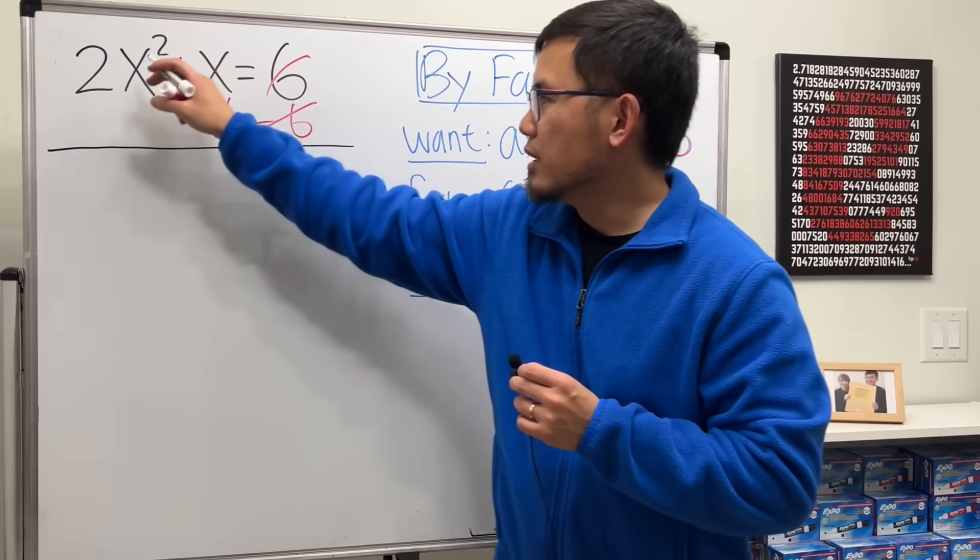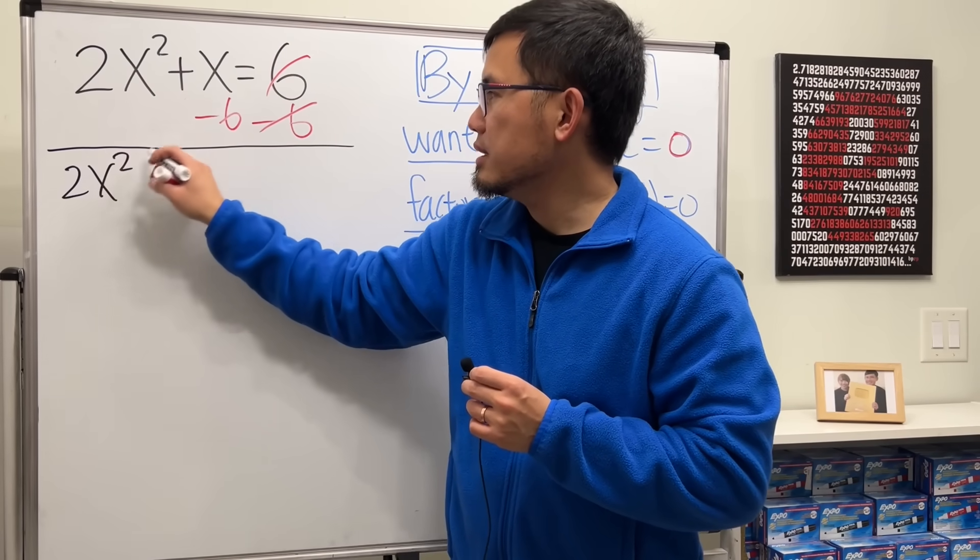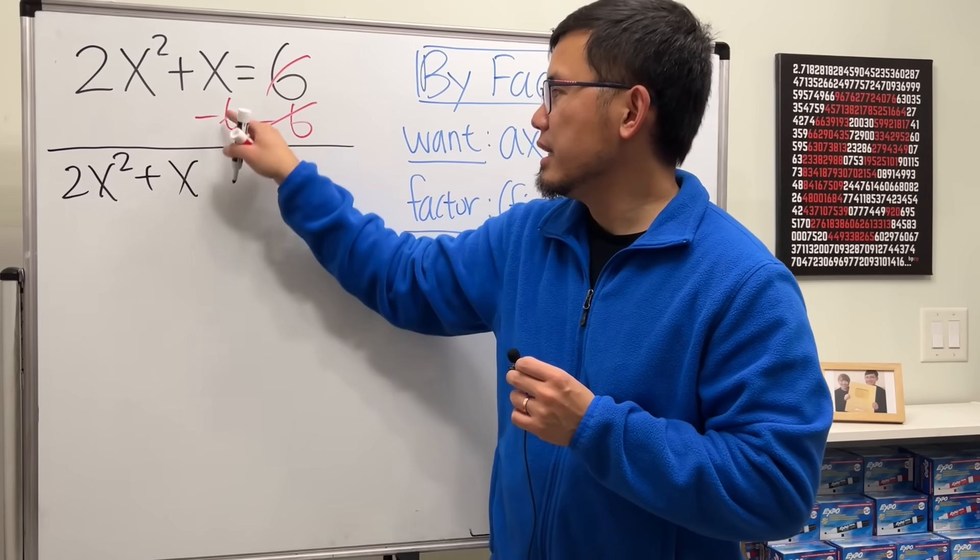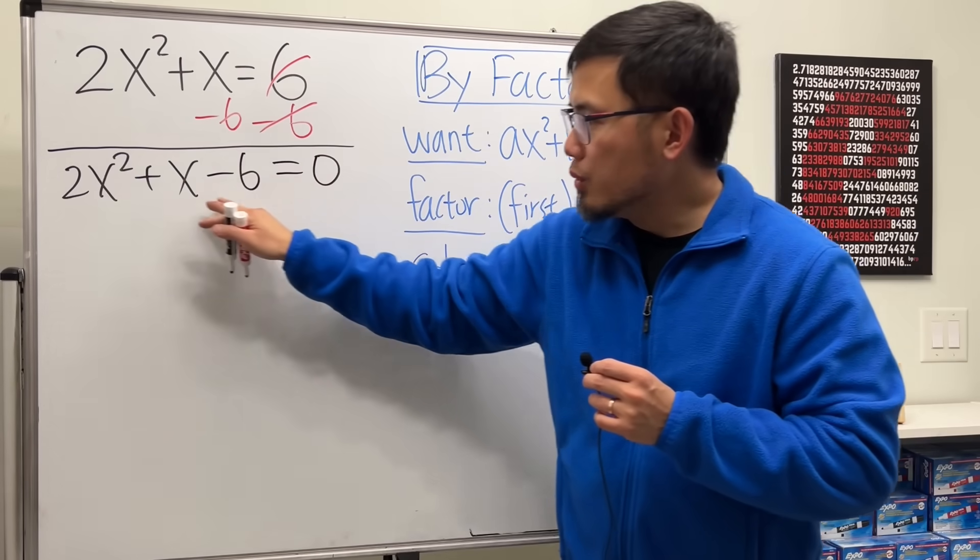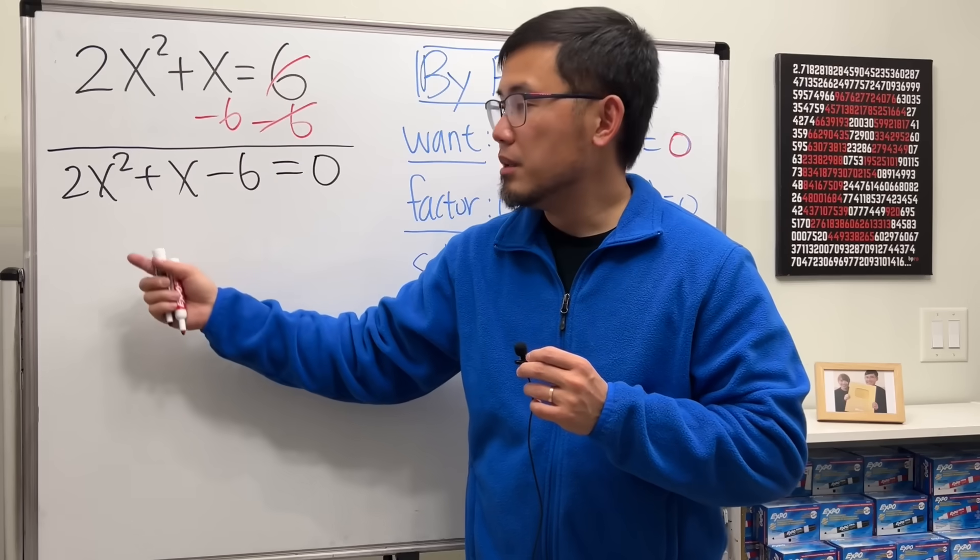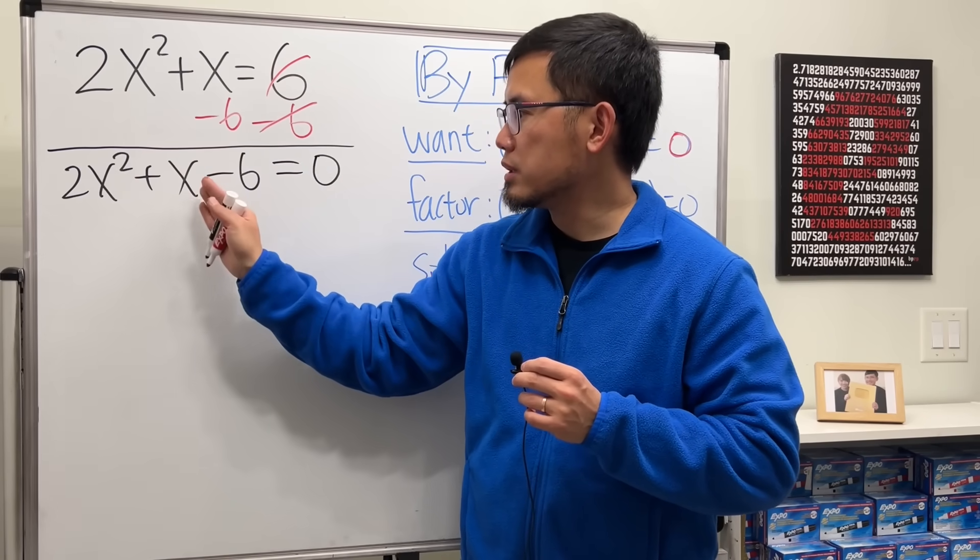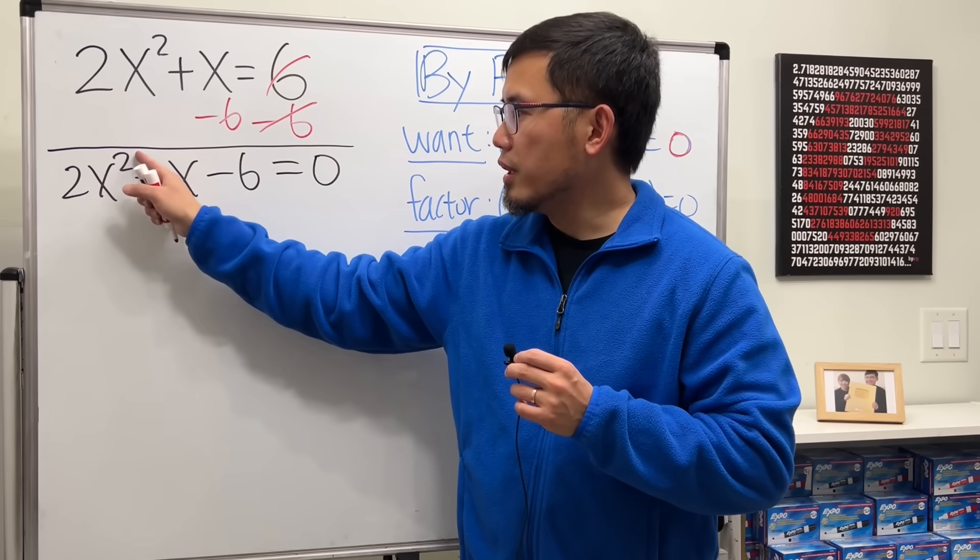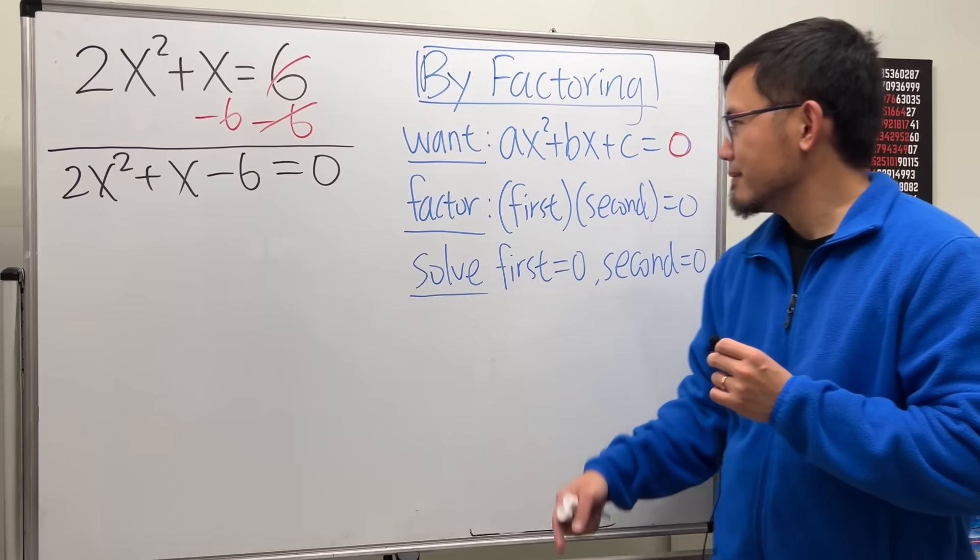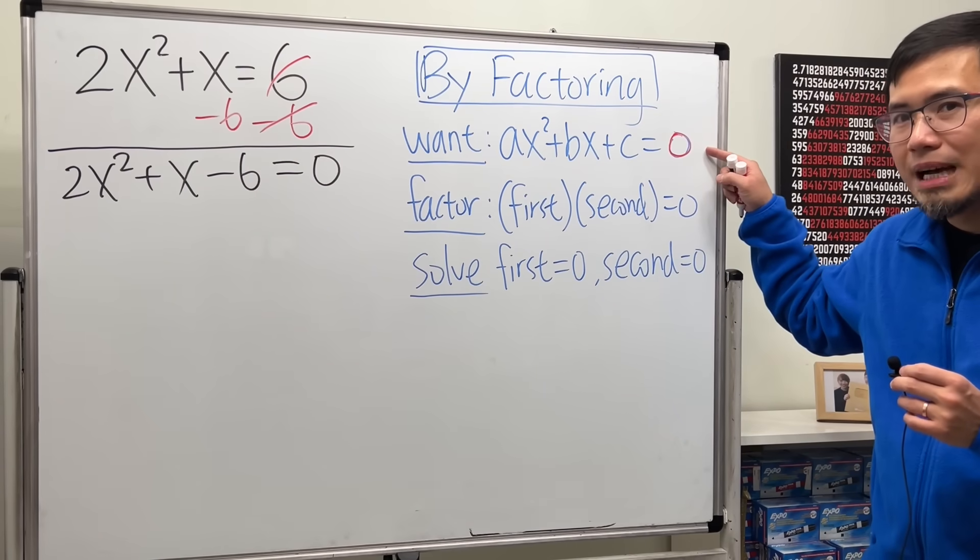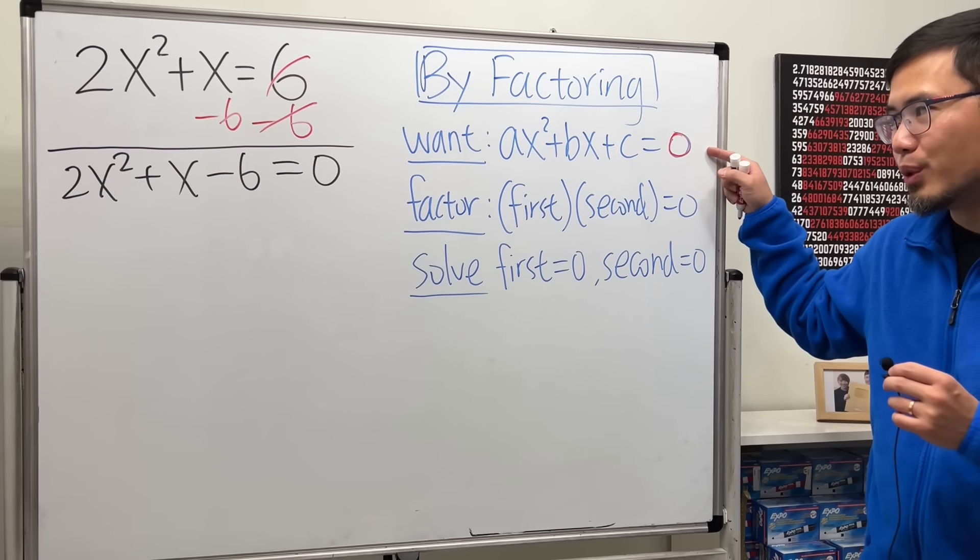So we will get 2x squared plus x minus 6 equals 0. Notice that we cannot combine any terms because the variables and also the powers are different: x squared, x to the first, and this one has no x. Alright, we did the first step. We have one side equal to 0.